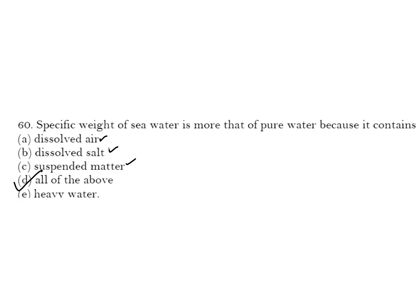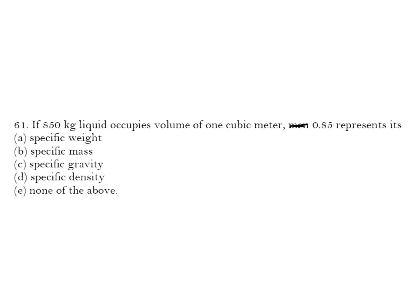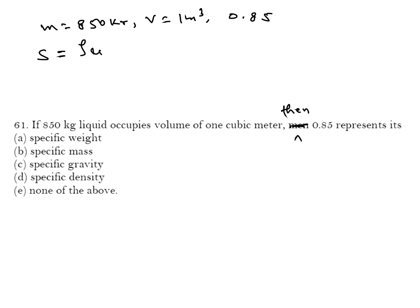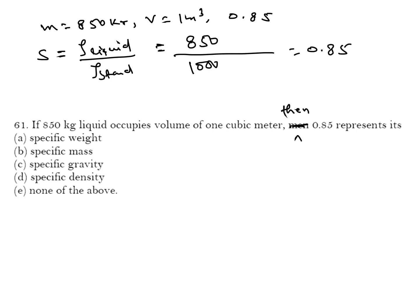If 850 kg of liquid occupies a volume of 1 m³, then 0.85 represents its specific gravity. Density of liquid = 850/1 = 850 kg/m³; divided by density of water (1000 kg/m³) gives 0.85. So 0.85 represents specific gravity S = density of fluid divided by density of standard fluid. C is your correct answer.